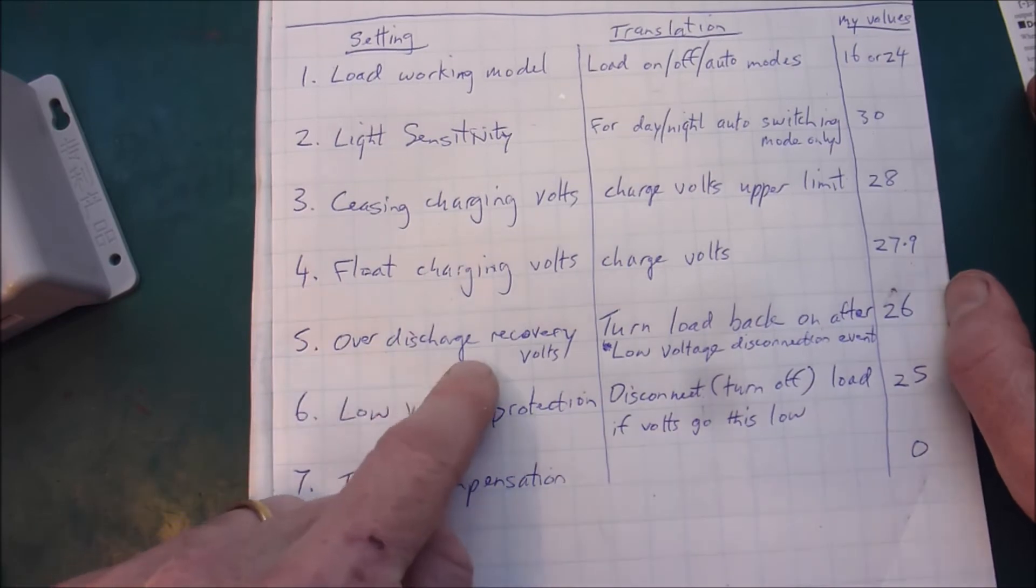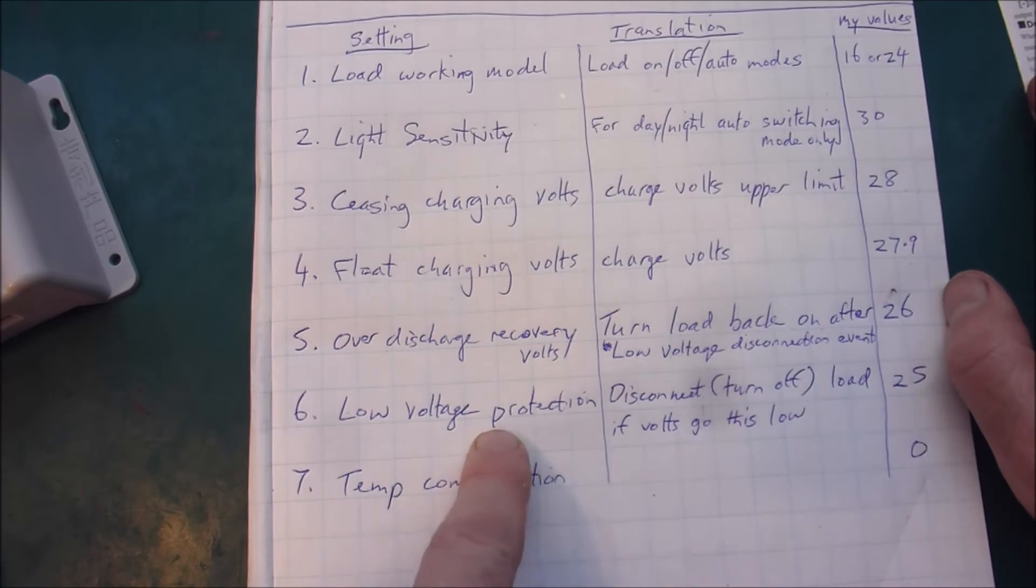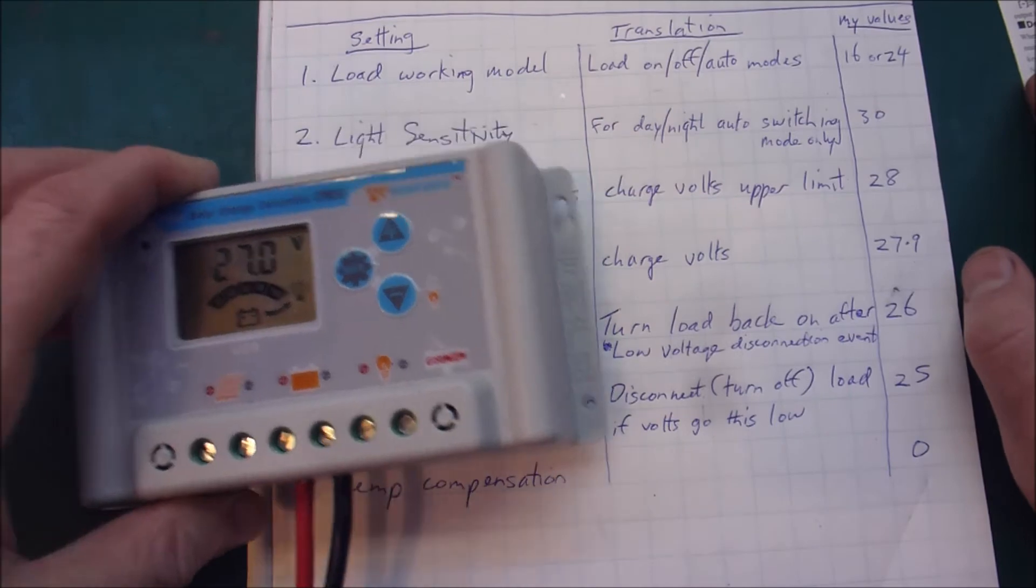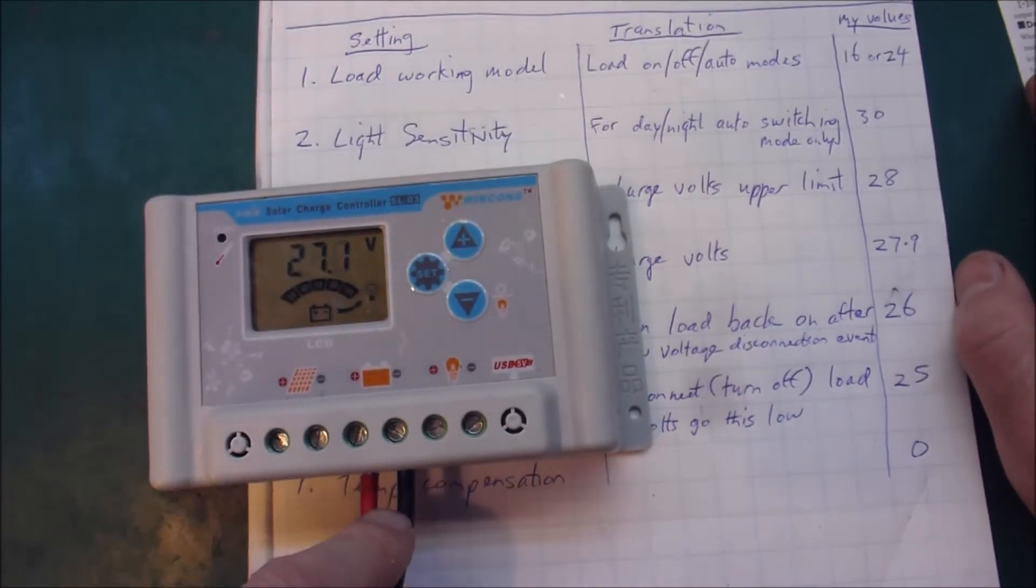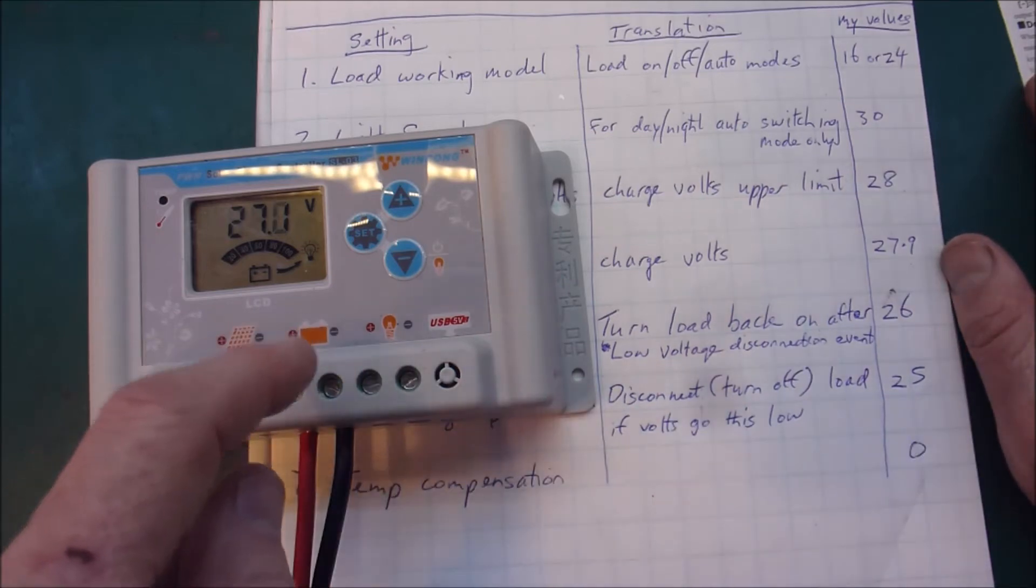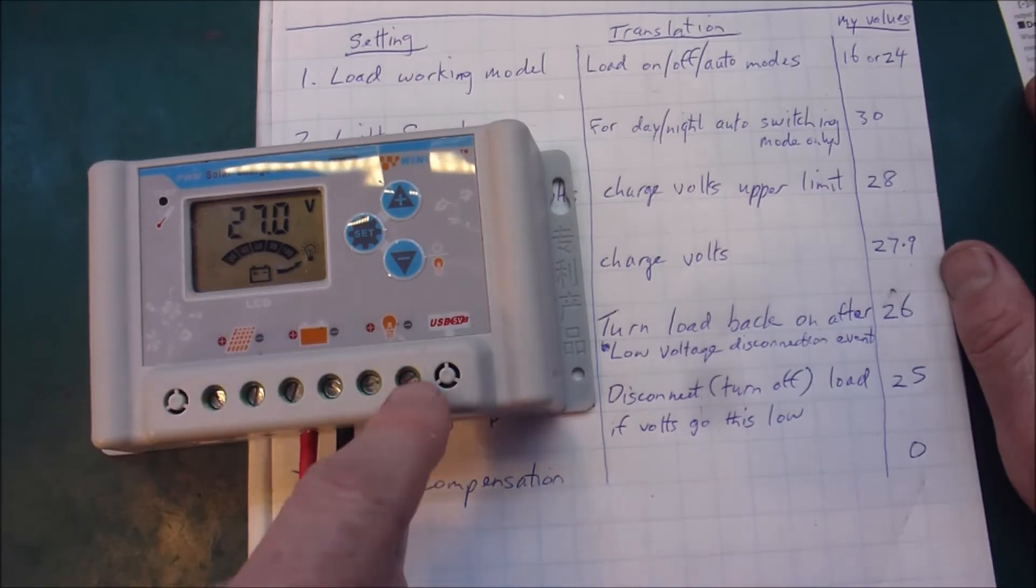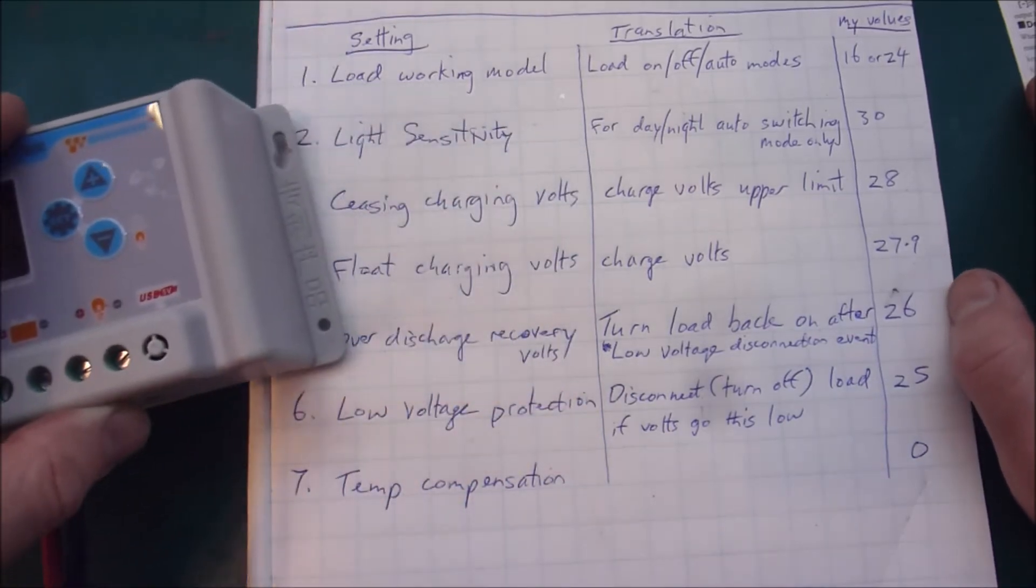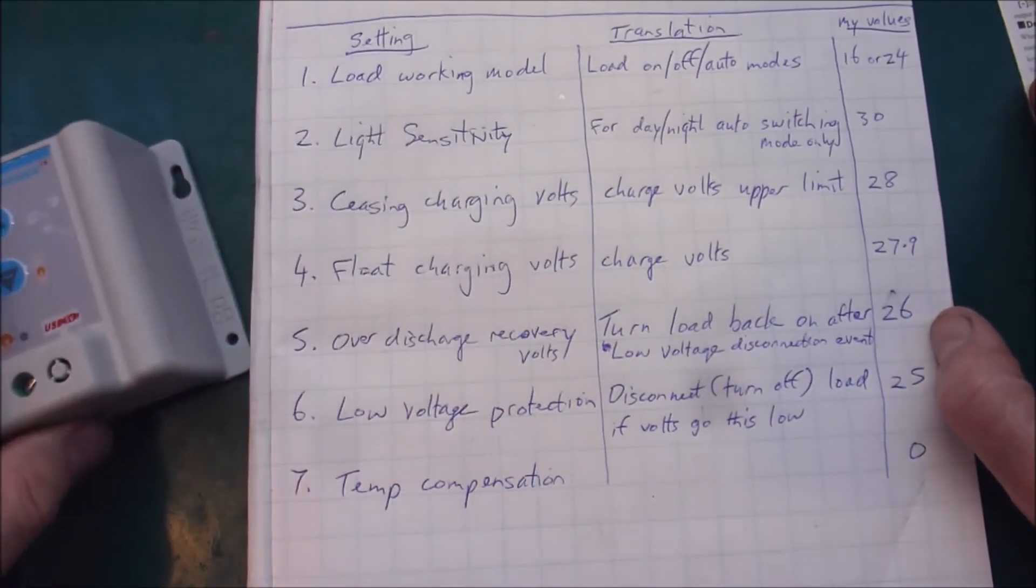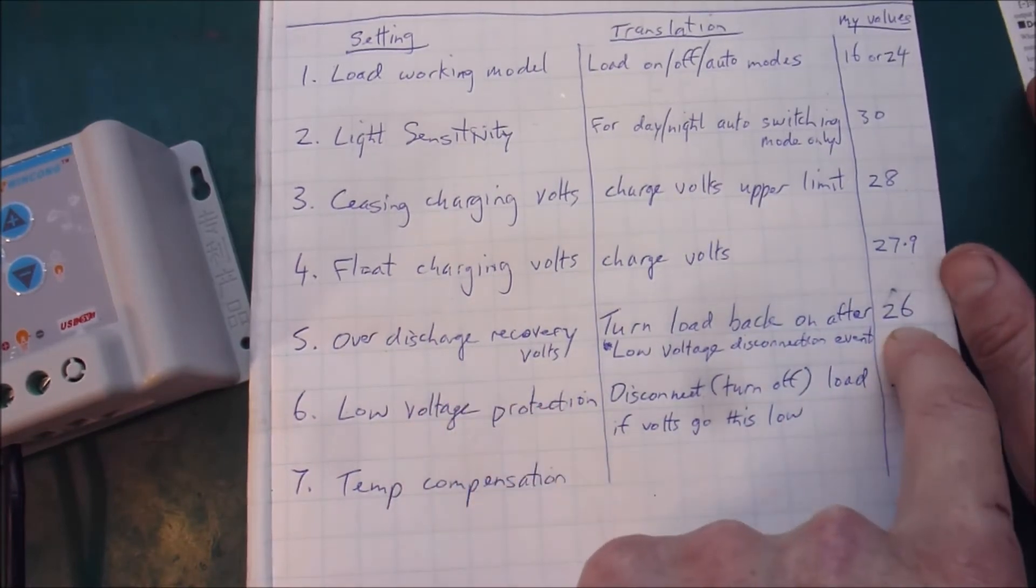The next is over discharge recovery volts which is related to setting 6 which I'll explain first. So setting 6 is low voltage protection which is fairly simple. When the battery volts goes below whatever this is set to, in my case 25 volts, then it will turn off the load if you have anything connected here. And then in that scenario it won't turn the load back on until the battery volts gets back up to whatever this is set to. So in my case 26 volts.